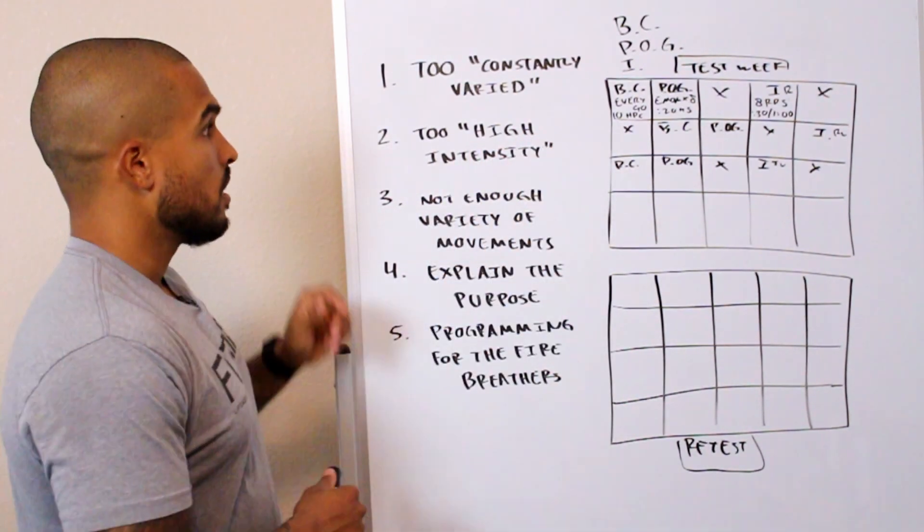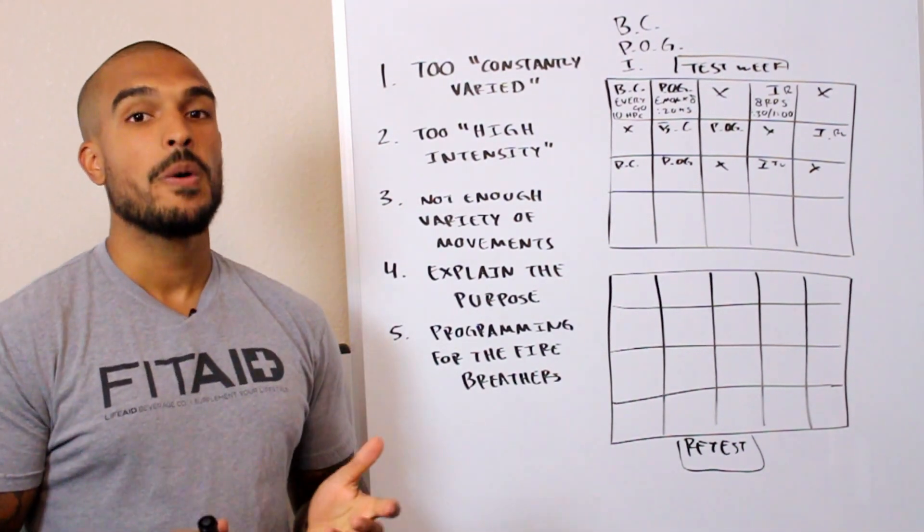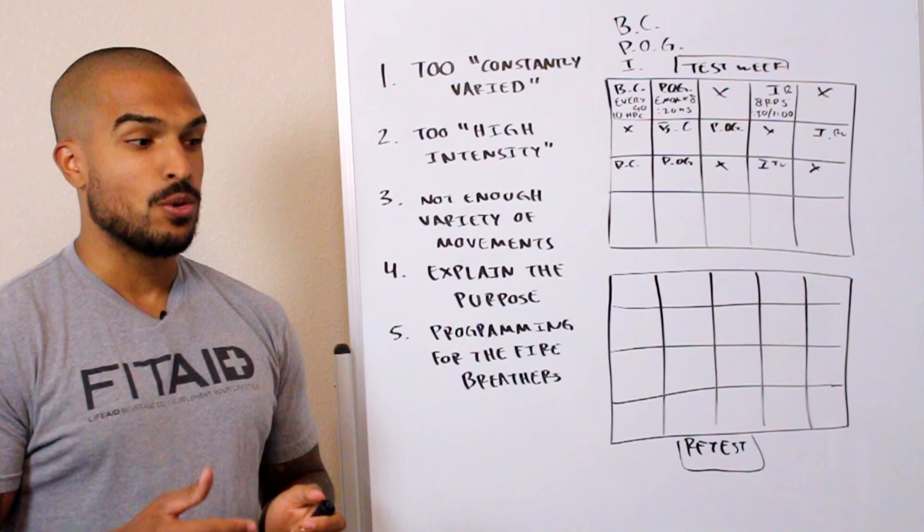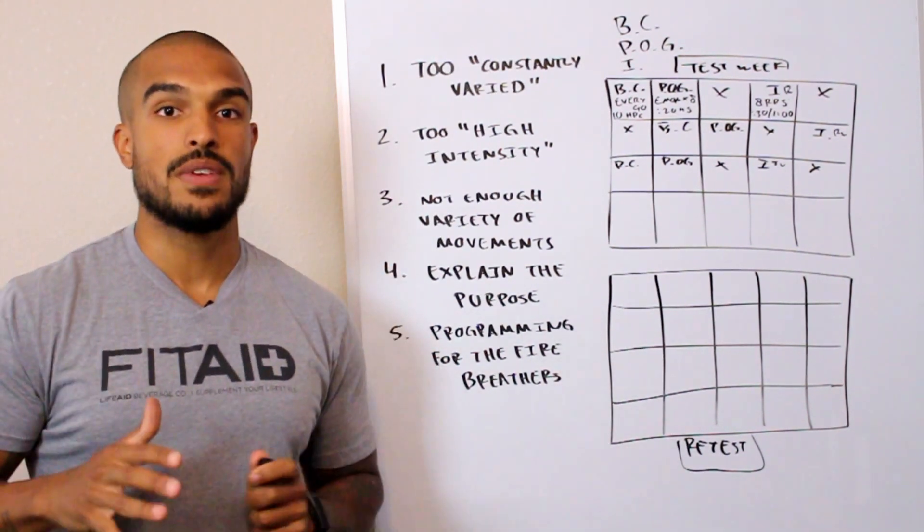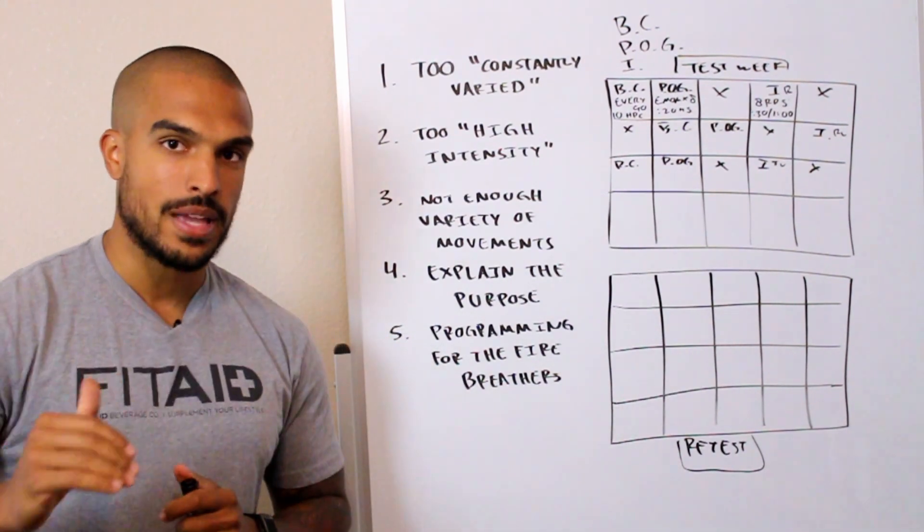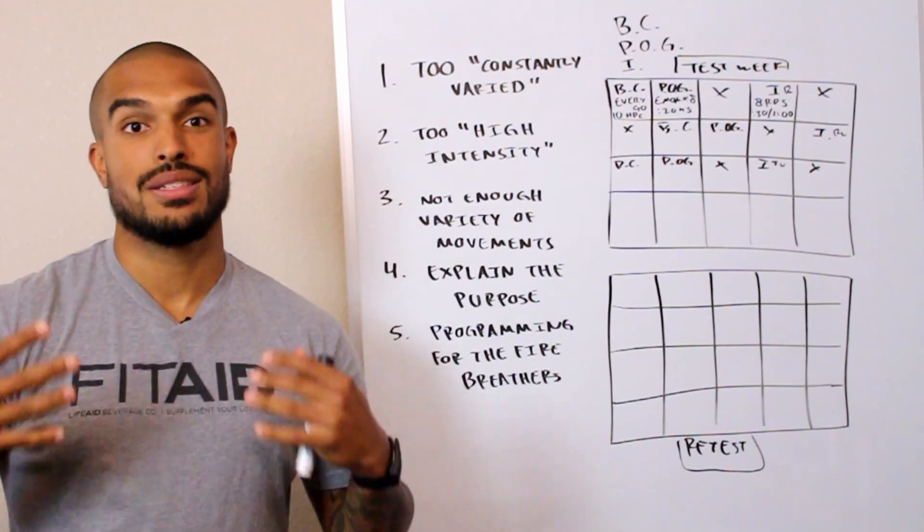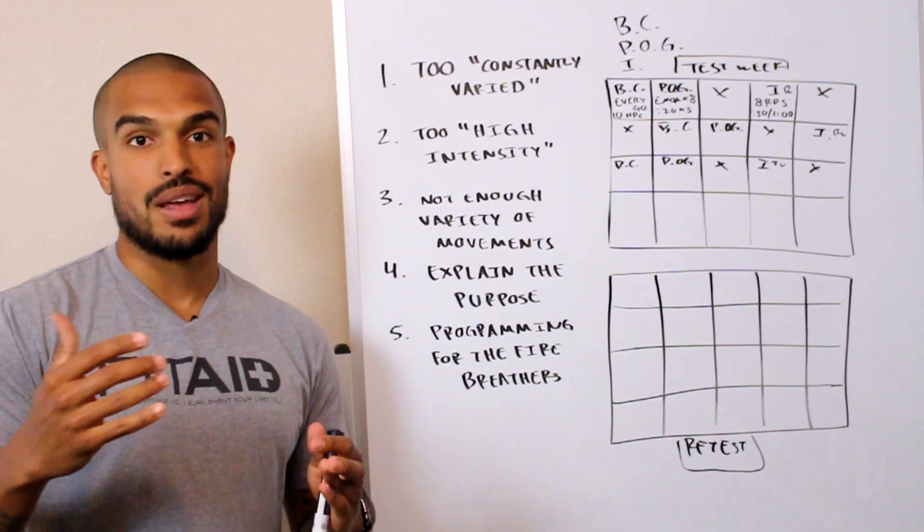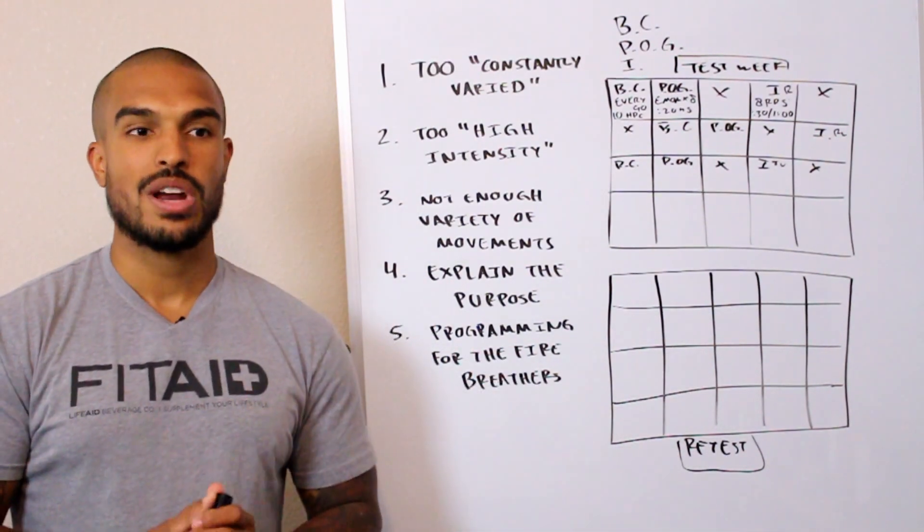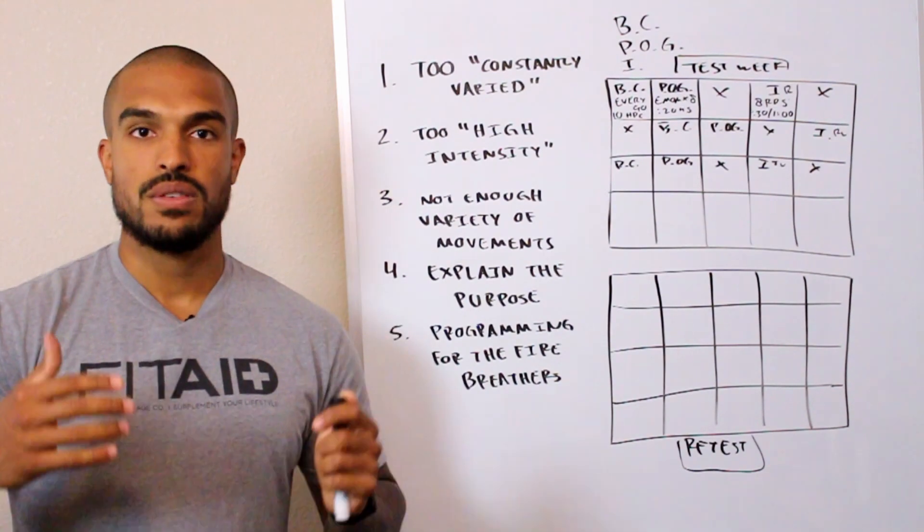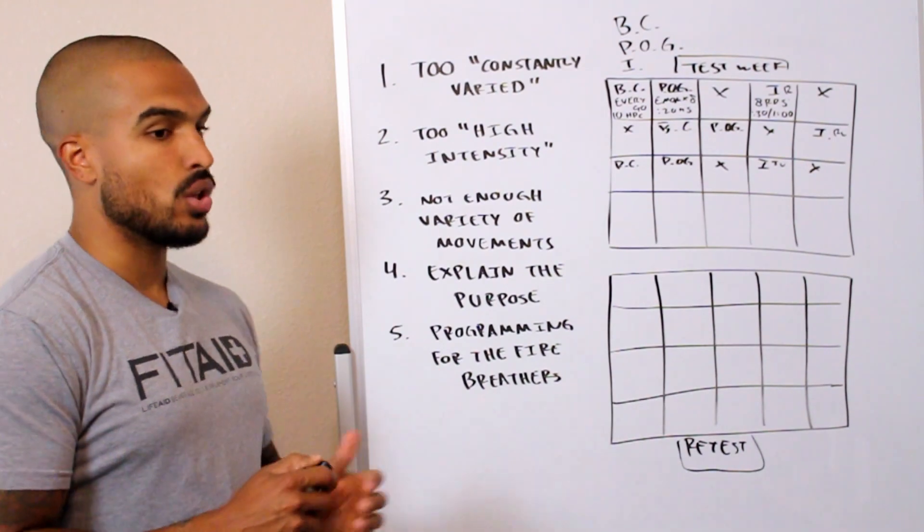Going into the five mistakes, the first one is it's too constantly varied. A lot of the gyms that I've seen, I'll follow online or whenever I hear a new gym or see a gym on Instagram, I always click on their website and go to their programming. I've seen a lot of gyms with their program - they program a lot of weird stuff too often.